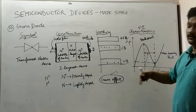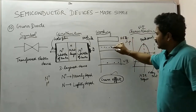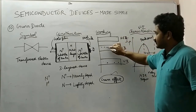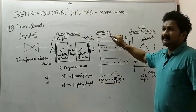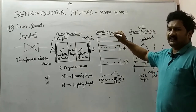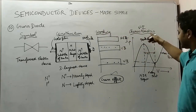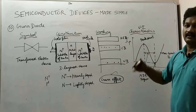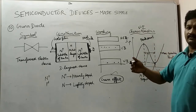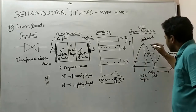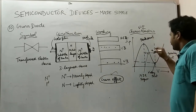This is the entire working principle of the Gunn diode. There is an effect called the Gunn effect. When the electrons transfer from the conduction band to the higher energy band and the voltage is further increased, there is no increase in current but instead a decrease in current — this effect is called the Gunn effect.